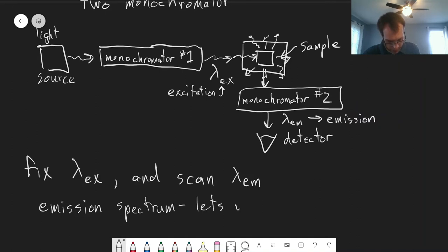And this lets us find where we get maximum emission of light, what wavelength. Because depending on the exact values of the energy levels, you don't know exactly where you're going to get maximum emission of light. So you're seeing the fluorescence occurring as a function of wavelength at which that fluorescence occurs.